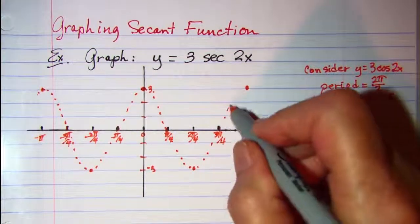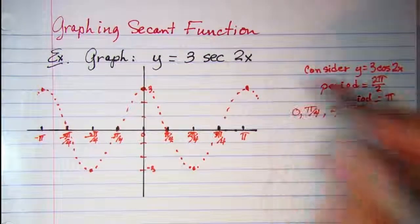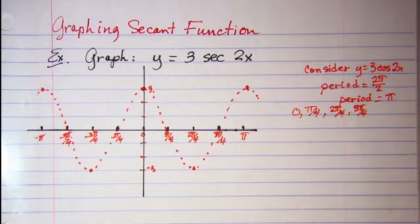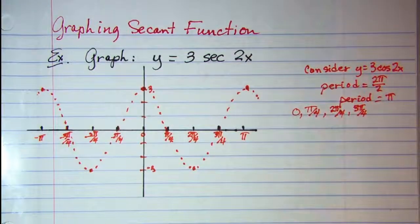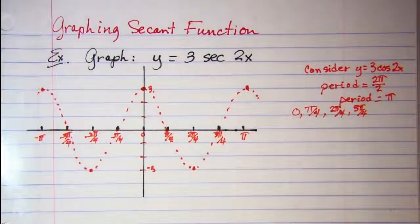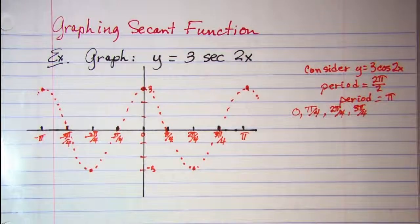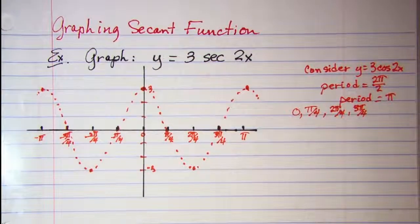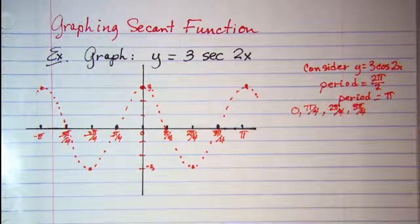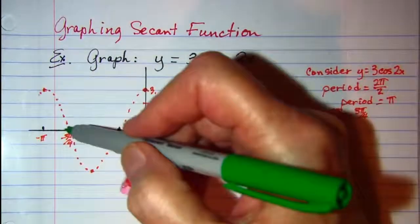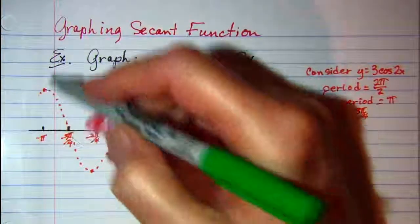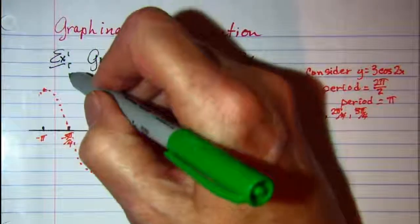So this is our cosine curve and I want to draw our secant curve which is the reciprocal of this orange one. So everywhere where I have 0 I'm going to have an asymptote.